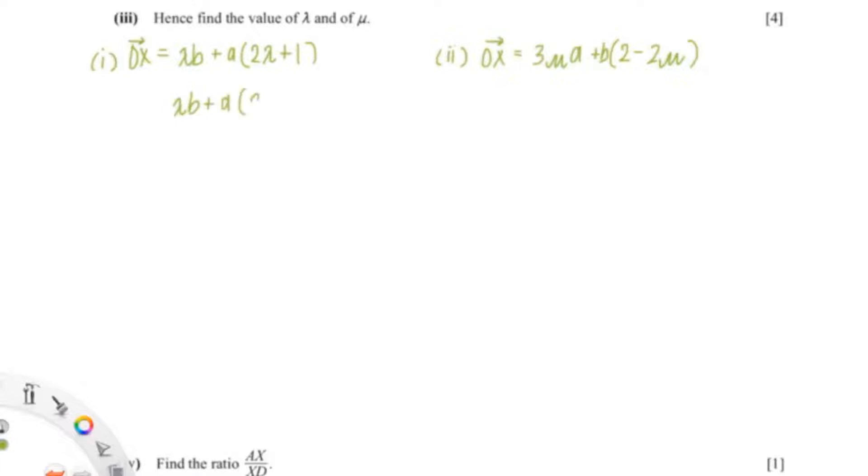So now we can just equal these 2 equations like so. And from this equation we can just derive 2 separate equations. So the blue is one equation and the red will be another equation. So that would be lambda equals 2 minus 2 mu. We can ignore the B and for here it would be 2 lambda plus 1 equals 3 mu.